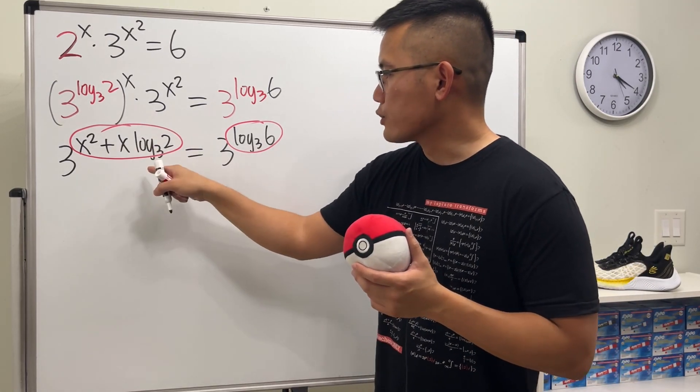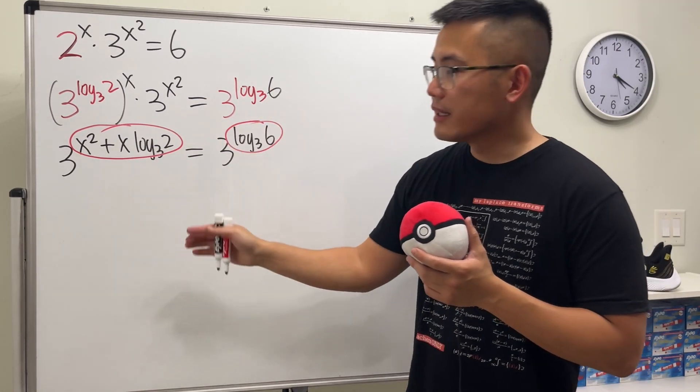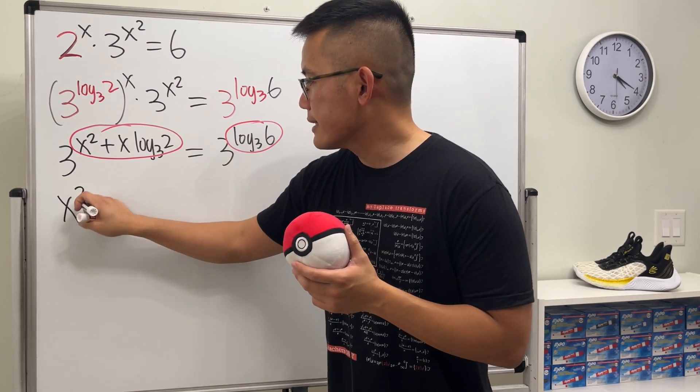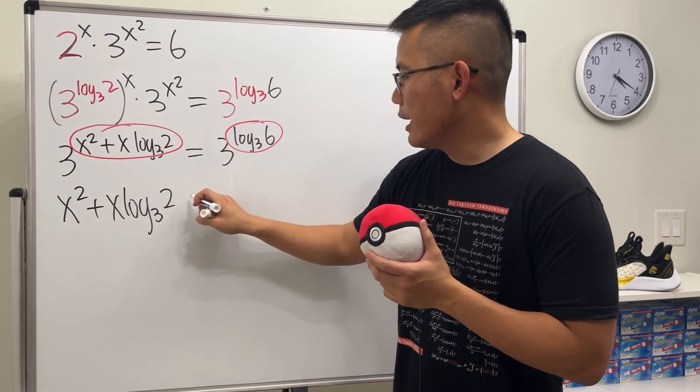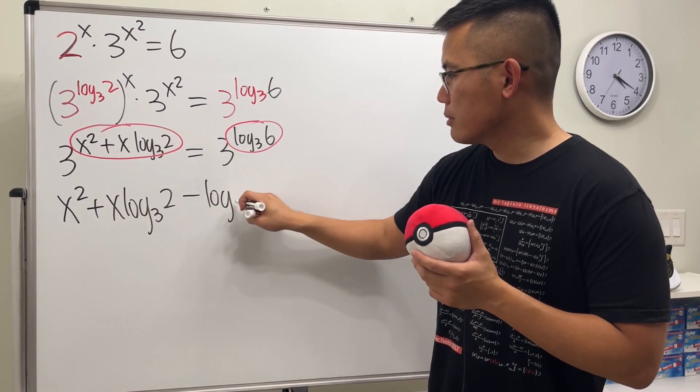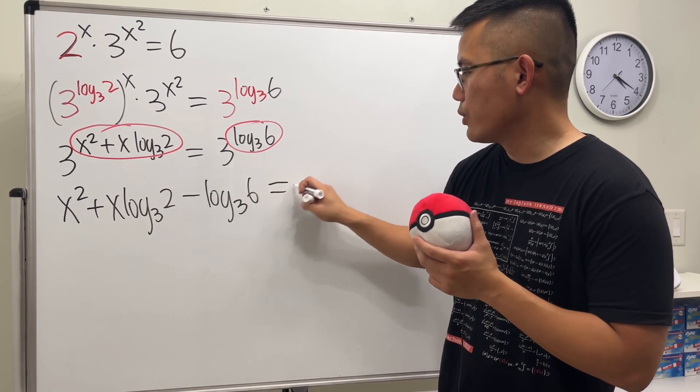So we have a quadratic equation. Let's move this to the left side, so we are going to get x squared plus x times log base 3 of 2 and then minus log base 3 of 6, and that equals 0.